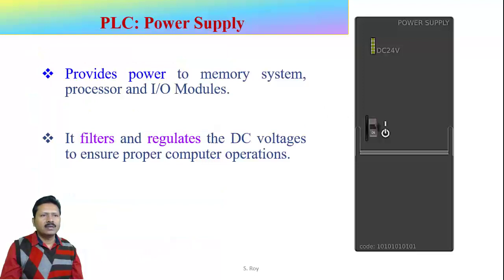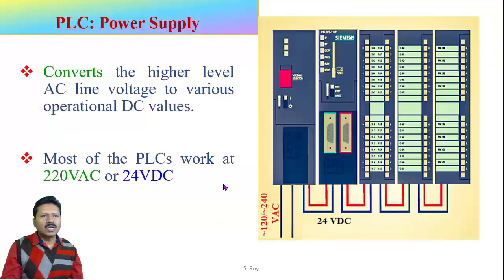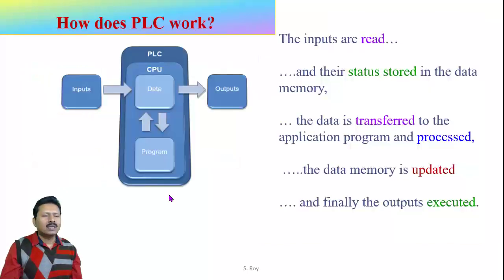The power supply provides power to the CPU and all electronic accessories, including all input/output modules and interface modules. Input/output modules and processors operate on DC voltage, normally 24V DC. The power supply module must have the facility of filtration and regulates the DC voltage to ensure proper power supply to the CPU and other accessories. It converts the high level AC supply voltage — normally 120 or 240V AC — to the required 24V DC operational voltage.